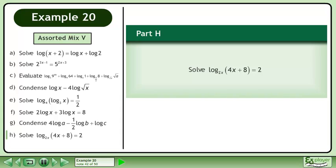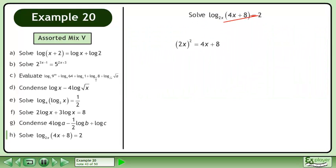In Part H, solve log₂ₓ(4x + 8) = 2. Convert to exponential form using the 7 rule. (2x)² = 4x + 8. Bring all terms to the left side. Divide both sides by 4. Factor the trinomial.